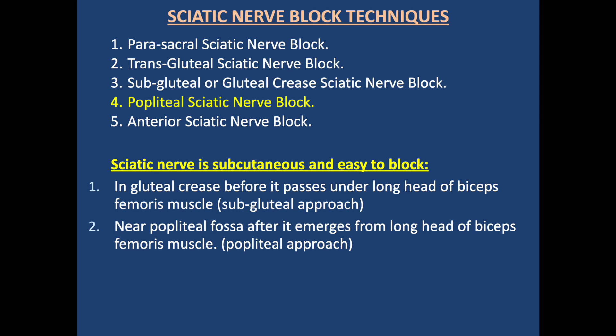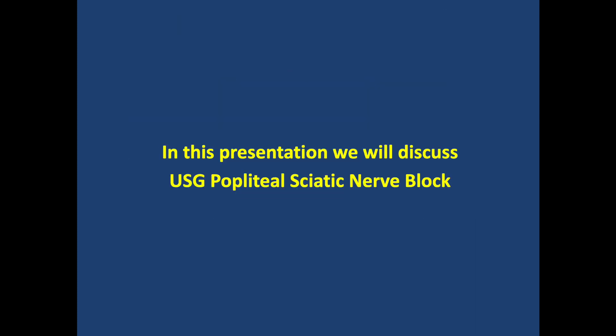The sciatic nerve is subcutaneous and is easy to block at two levels. Number one is in the gluteal crease, before it passes under the long head of biceps femoris muscle — the subgluteal approach. The second is near the popliteal fossa, after it emerges from the long head of biceps femoris muscle, moving towards the popliteal fossa. In this presentation we will discuss Ultrasound Guided Popliteal Sciatic Nerve Block.